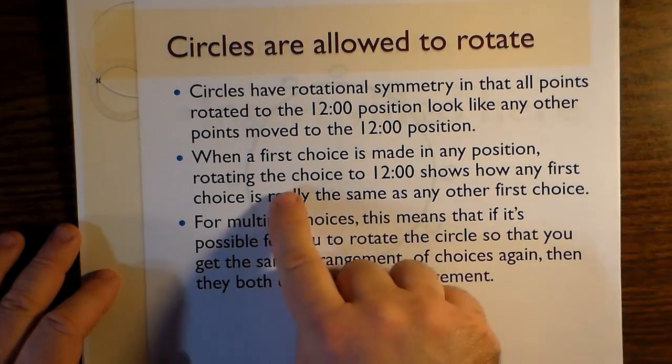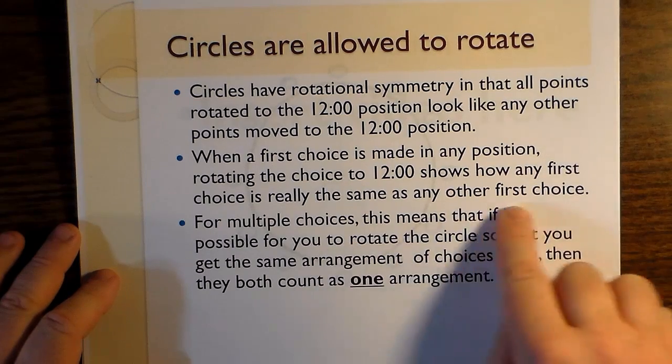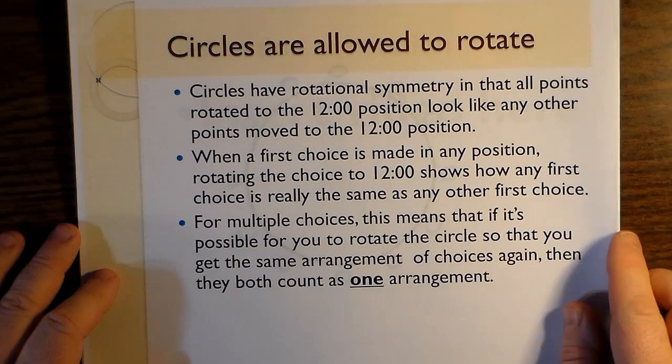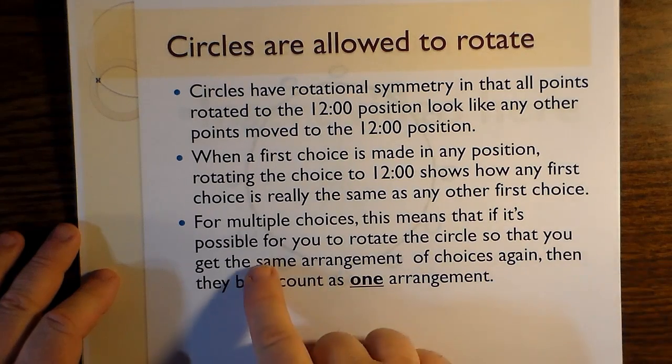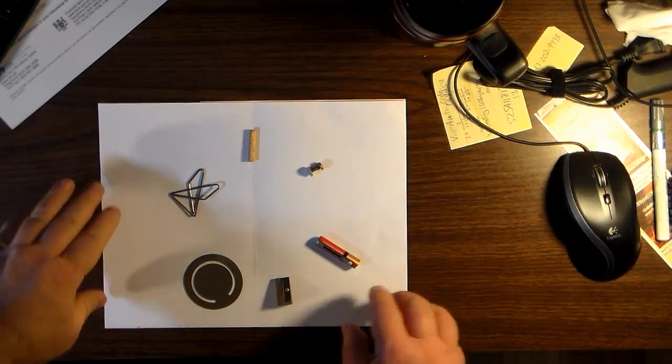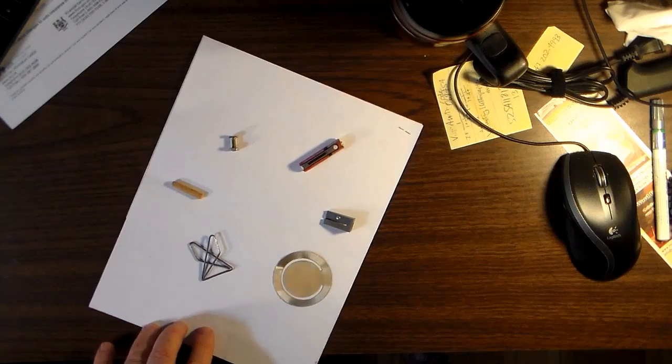Circles are allowed to rotate. Circles have rotational symmetry, in that all points rotated to the twelve o'clock position look like any other points moved to the twelve o'clock position. When a first choice is made in any position, rotating the choice to twelve o'clock shows how any first choice is really the same as any other first choice.